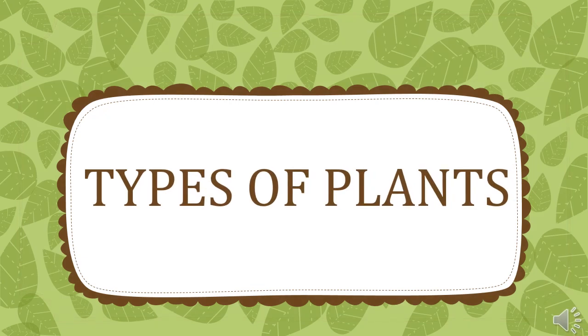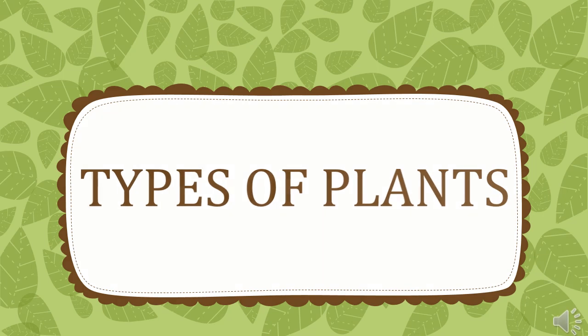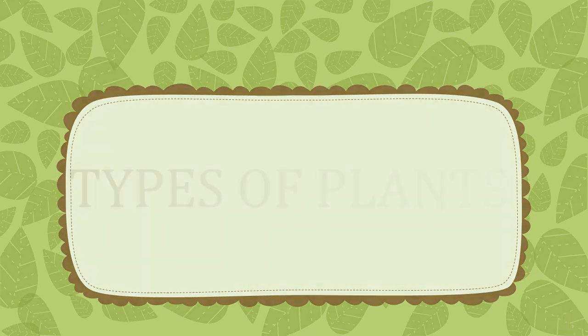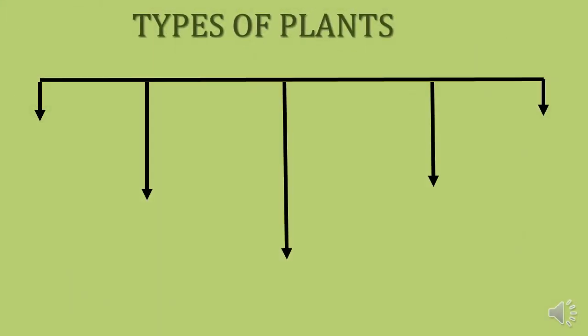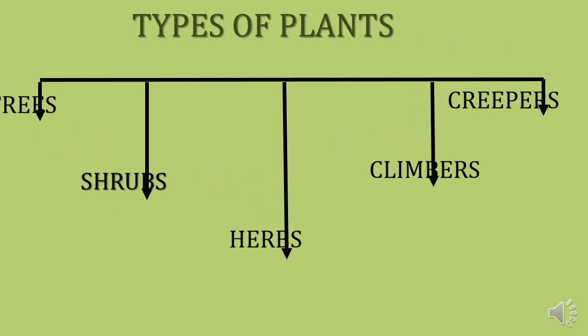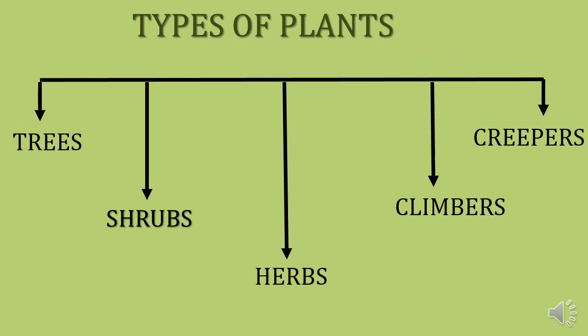Now let's see what are the different types of plants: trees, shrubs, herbs, climbers and creepers. Let's see each one in detail.